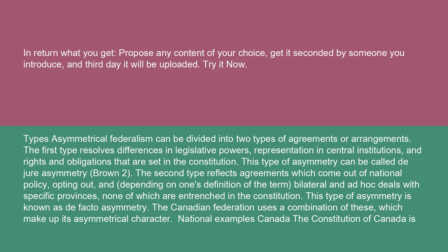The second type reflects agreements which come out of national policy, opting out, and depending on one's definition of the term, bilateral and ad hoc deals with specific provinces, none of which are entrenched in the constitution. This type of asymmetry is known as de facto asymmetry. The Canadian federation uses a combination of these, which make up its asymmetrical character.